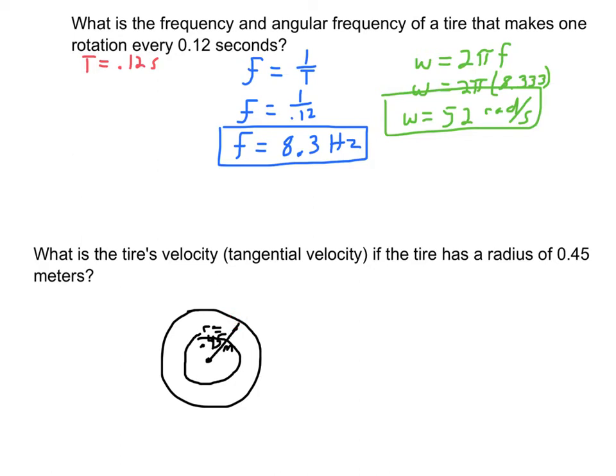It's really its speed. If the tire has a radius of 0.45 meters, and the tire isn't speeding up or slowing down, I can use the constant velocity equation. Velocity equals displacement divided by time, and I just need to figure out how far the edge of the tire goes.